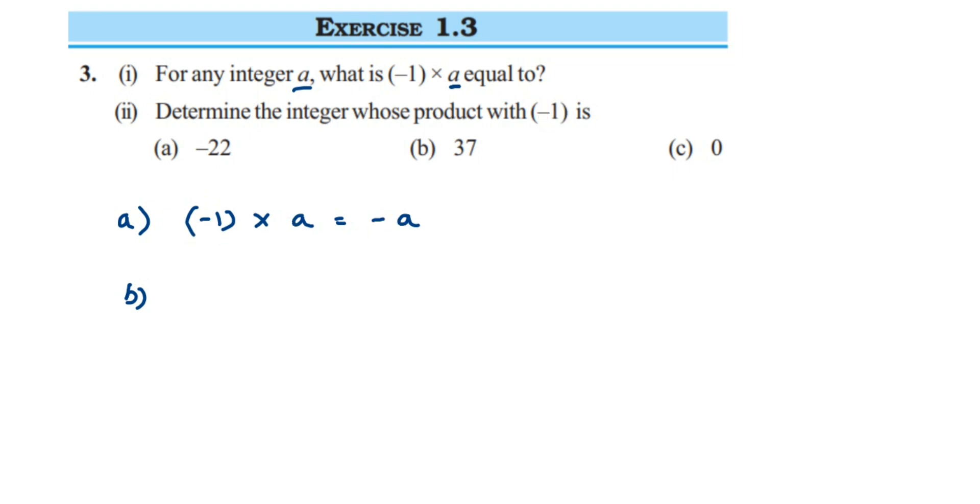We know that whenever we multiply minus one with a, we'll get minus a. So when you multiply minus one with minus 22, it will be minus of minus 22. Whether this minus is a sign, in place of a we're going to get minus 22, which will be plus 22. So directly you can use the first question, directly substitute and get the answer, or you can solve it like we have done for the first question.